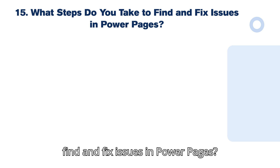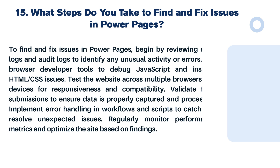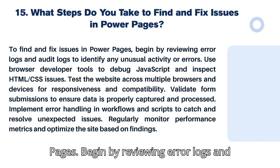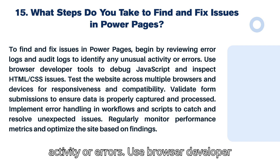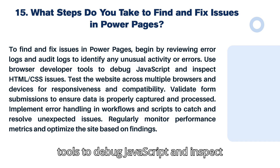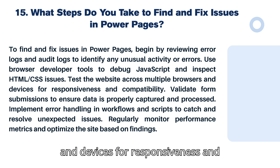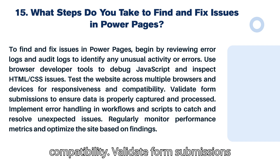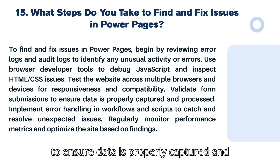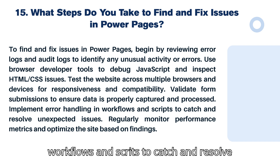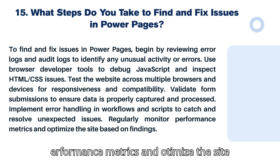Question 15: What steps do you take to find and fix issues in Power Pages? Begin by reviewing error logs and audit logs to identify any unusual activity or errors. Use browser developer tools to debug JavaScript and inspect HTML and CSS issues. Test the website across multiple browsers and devices for responsiveness and compatibility. Validate form submissions to ensure data is properly captured and processed. Implement error handling in workflows and scripts to catch and resolve unexpected issues, and regularly monitor performance metrics to optimize the site.